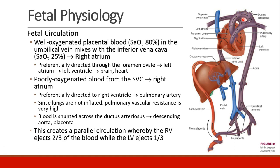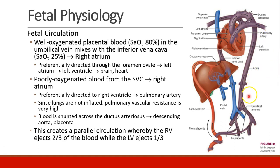Either way, since the lungs aren't inflated, pulmonary vascular resistance is very high, and any blood that does go into the pulmonary vasculature gets shunted across the ductus arteriosus and into the descending aorta and back to the placenta. We see a parallel circulation where the right ventricle ejects about two-thirds of the blood and the left ventricle ejects about one-third. As much of it as possible bypasses the lungs and goes back to the aorta and down to the umbilical arteries, which go back to the placenta for oxygenation.